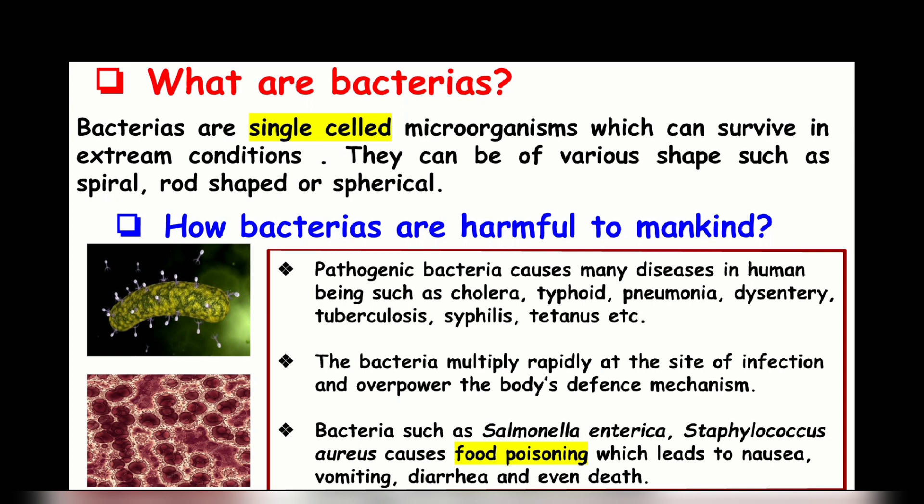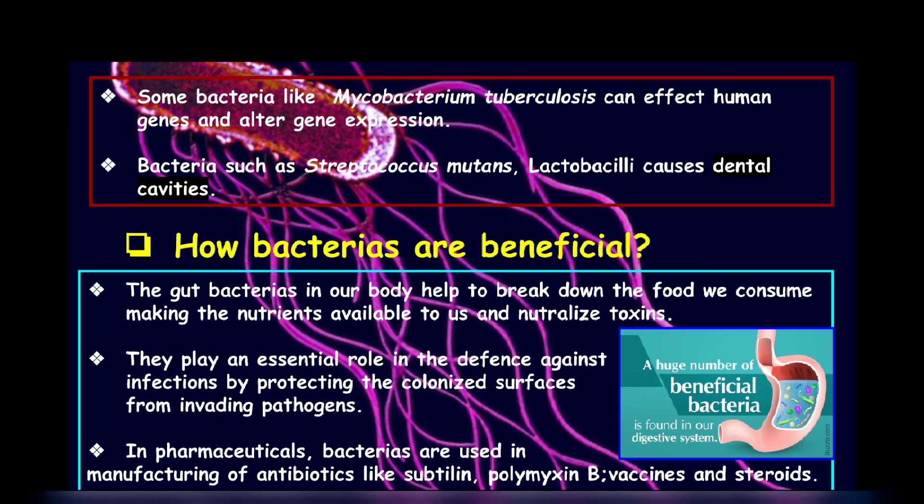Contamination of water with bacteria leads to headline-catching outbreaks of cholera. Some saprophytic bacteria grow on unprotected foodstuffs and spoil them by causing decay. Some produce toxins which may damage host cells and interfere with various bodily systems. They multiply rapidly at the site of infection and overpower the body's defense mechanisms. Thus, in these ways, they are a poison to our life.